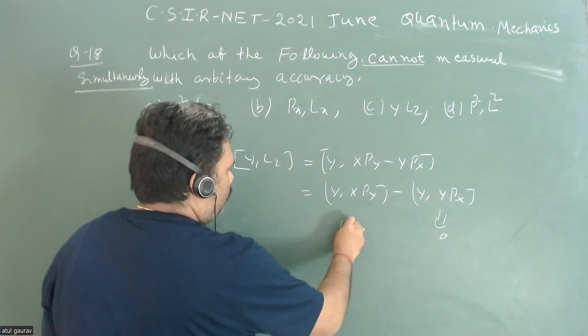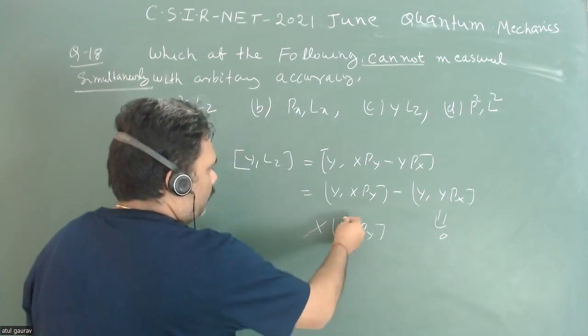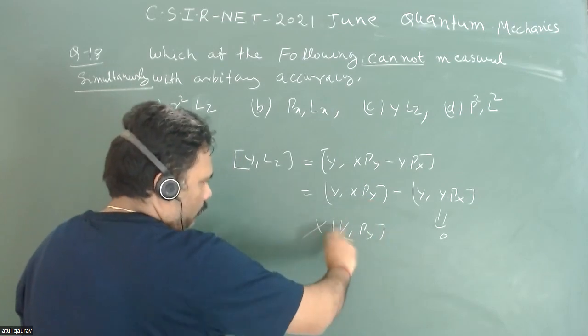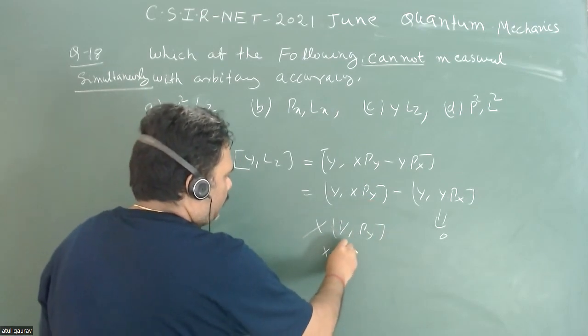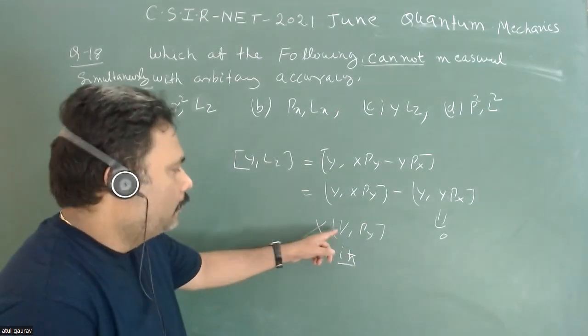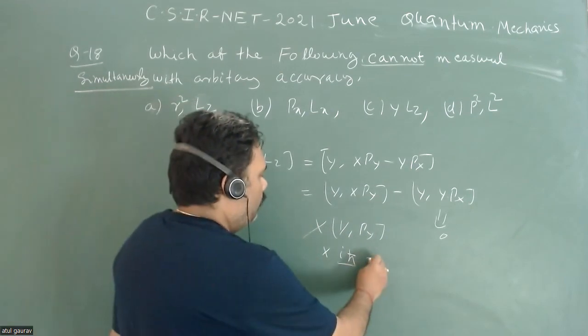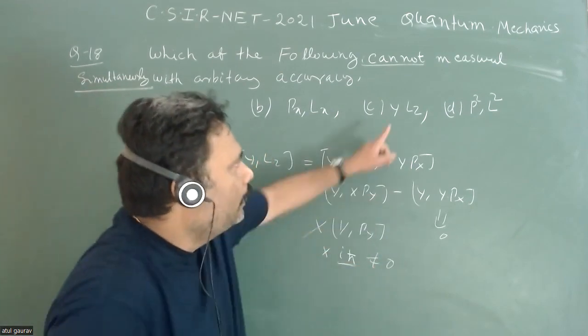When you go for this particular thing, the value is y Py and I can take x here. Y and Py are not going to commute, so this is x into iℏ. They are basically conjugate variables so they don't commute. That value is iℏx which is not equal to zero.